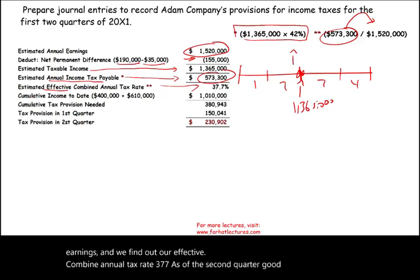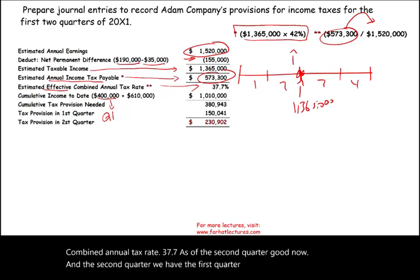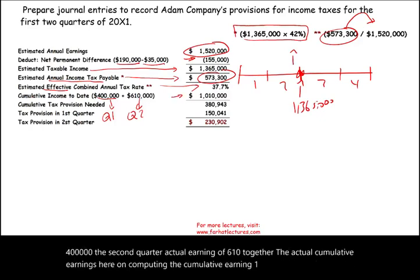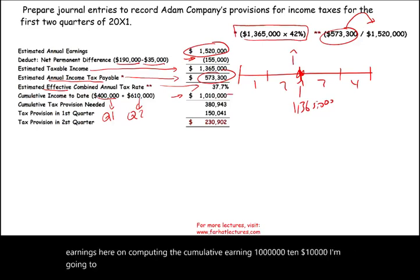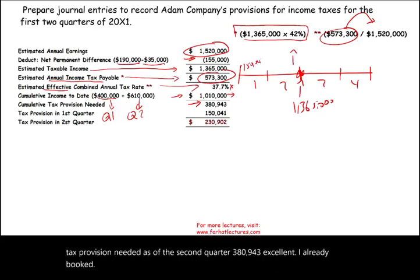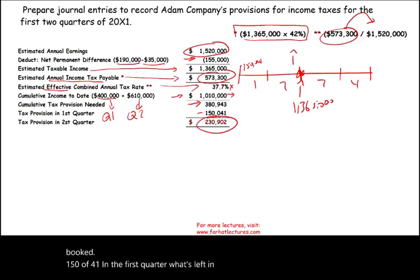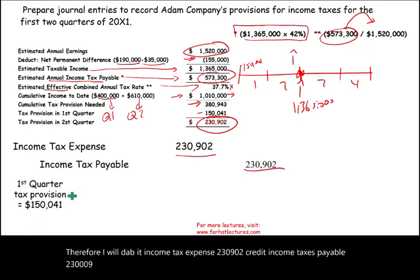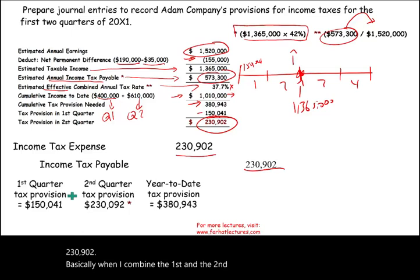In the second quarter we have the first quarter actual earnings of four hundred thousand and the second quarter actual earnings of six hundred and ten thousand. Together the cumulative earnings are one million ten thousand dollars. Multiplying by thirty-seven point seven percent gives a cumulative tax provision needed as of Q2 of three hundred eighty thousand nine hundred forty-three dollars. I already booked one hundred fifty thousand forty-one in Q1, so the remaining Q2 provision is two hundred thirty thousand nine hundred and two dollars. I debit income tax expense and credit income taxes payable for that amount. Combined, Q1 and Q2 equal three hundred eighty thousand nine hundred forty-three dollars.